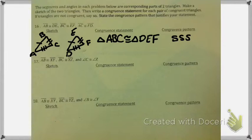Now let's do number 17. So again, let's go with AB and XY. They're congruent, it says.